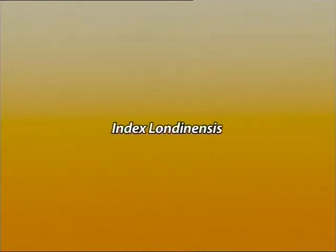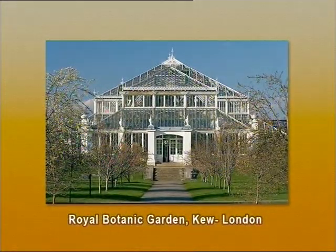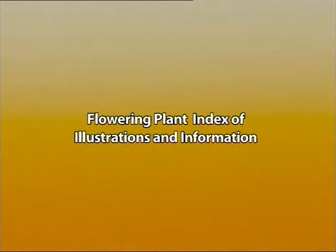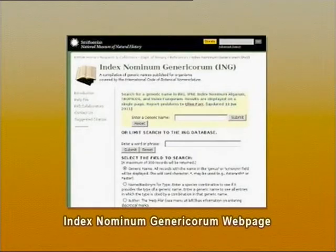One more index is Index Londonensis. It is basically an index of illustrations of vascular plants — not names, but illustrations — published from 1753 to 1935. It was compiled at Royal Botanic Gardens, Kew, and is arranged alphabetically by genus and species. For information on illustrations published after 1935, there is one more index: the Flowering Plant Index of Illustrations and Information, compiled by Isaakson in 1979. One more index is Index Nominum Genericorum — a compilation of generic names published for plants covered under the rules of the International Code of Botanical Nomenclature.